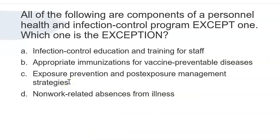Question: All of the following are components of a personnel health and infection control program except one. Which one is the exception? A: infection control education and training for staff; B: appropriate immunizations for vaccine-preventable diseases; C: exposure prevention and post-exposure management strategies; or D: non-work-related absences from illness? The answer is D. Infection control education and training for staff is essential.